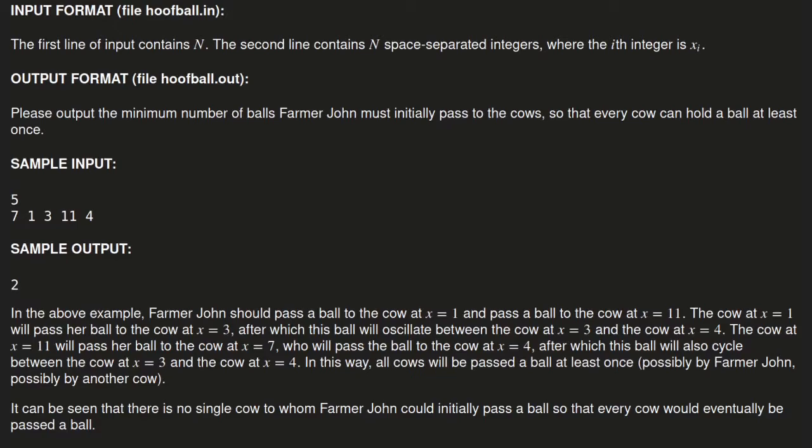The other case is pretty similar where if we start the ball at x equals 11, then the cow at 11 will pass the ball to four, then to three, then back to four. So that's another oscillating thing. So that's one of the edge cases, or one of the cases we need to worry about.